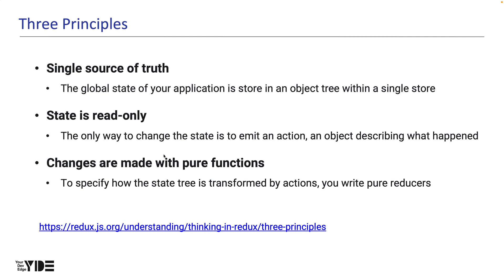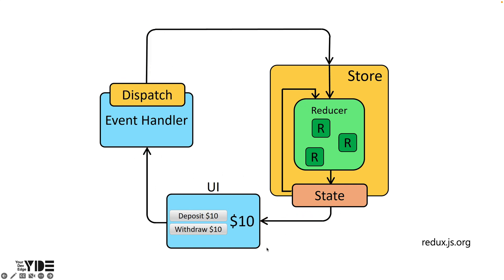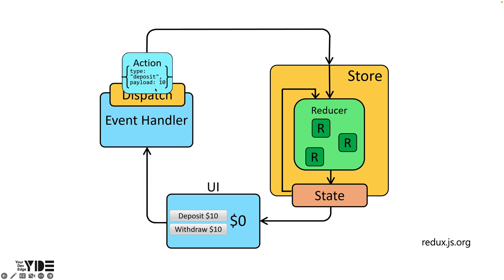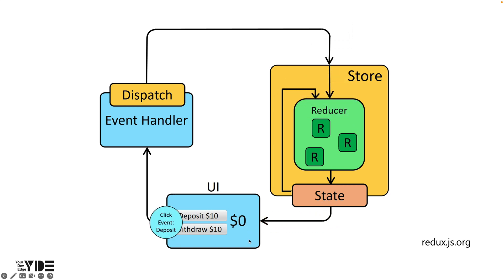Third, the new state calculation must be done using a pure function. How the triggered action changes the state tree is determined by creating a pure function called a reducer. The picture, taken from the Redux official site, illustrates this: actions are dispatched in response to user interactions such as button taps, the store executes the reducer function to compute the new state, and the UI reads the new state generated by the reducer to display the new value.